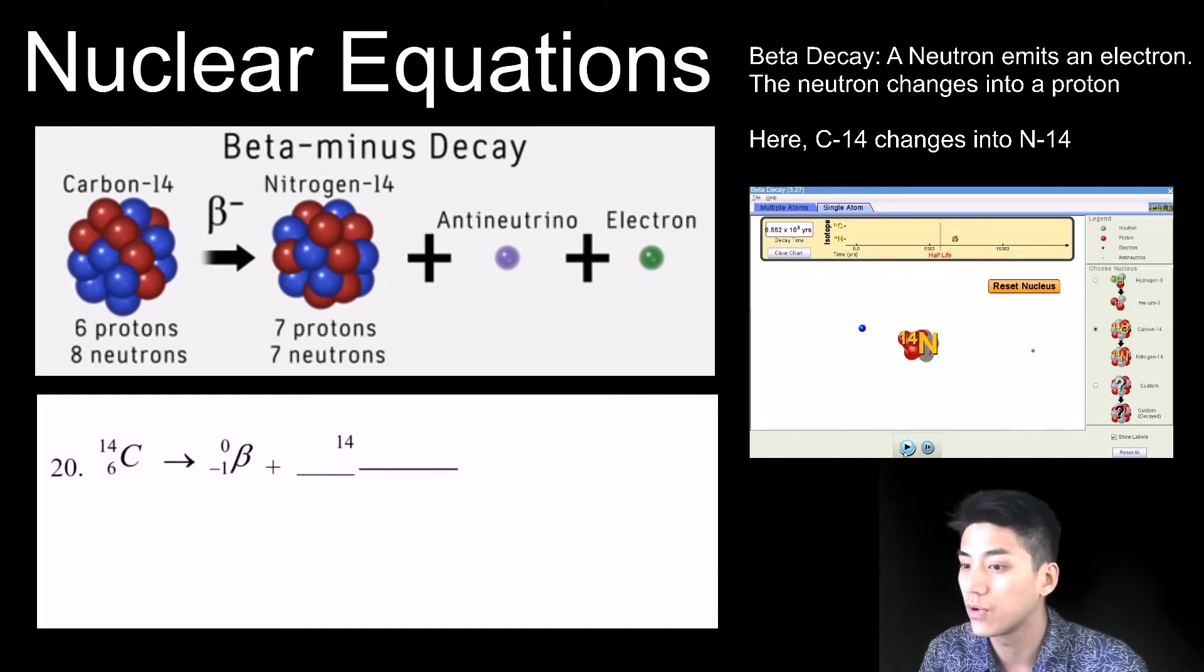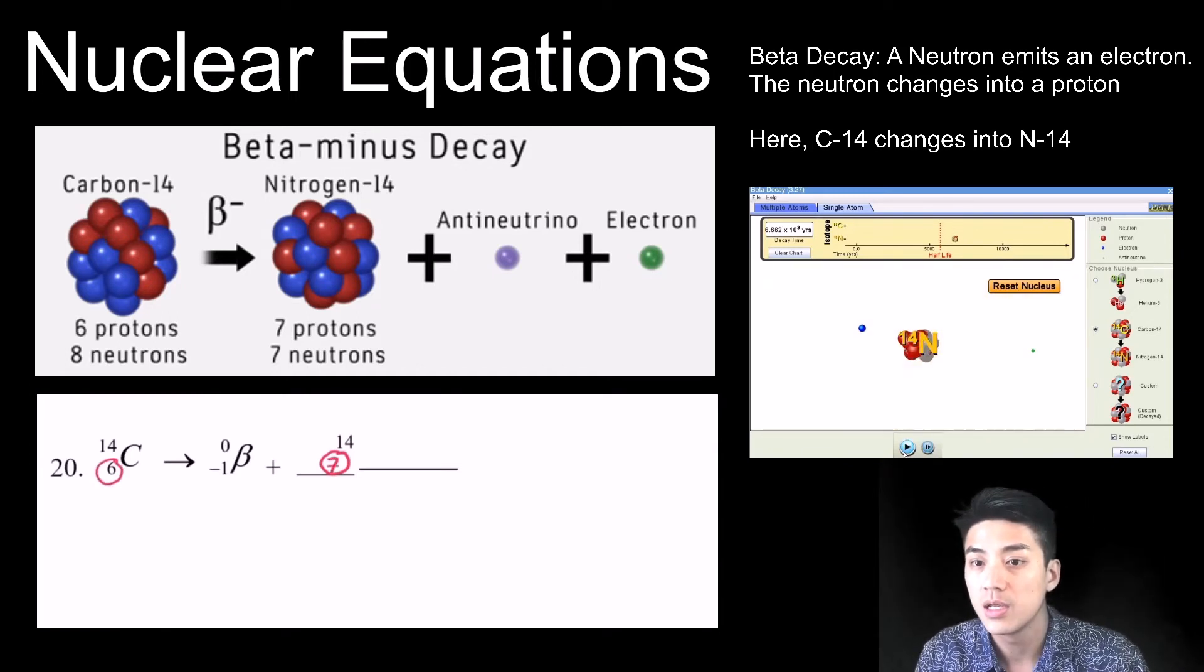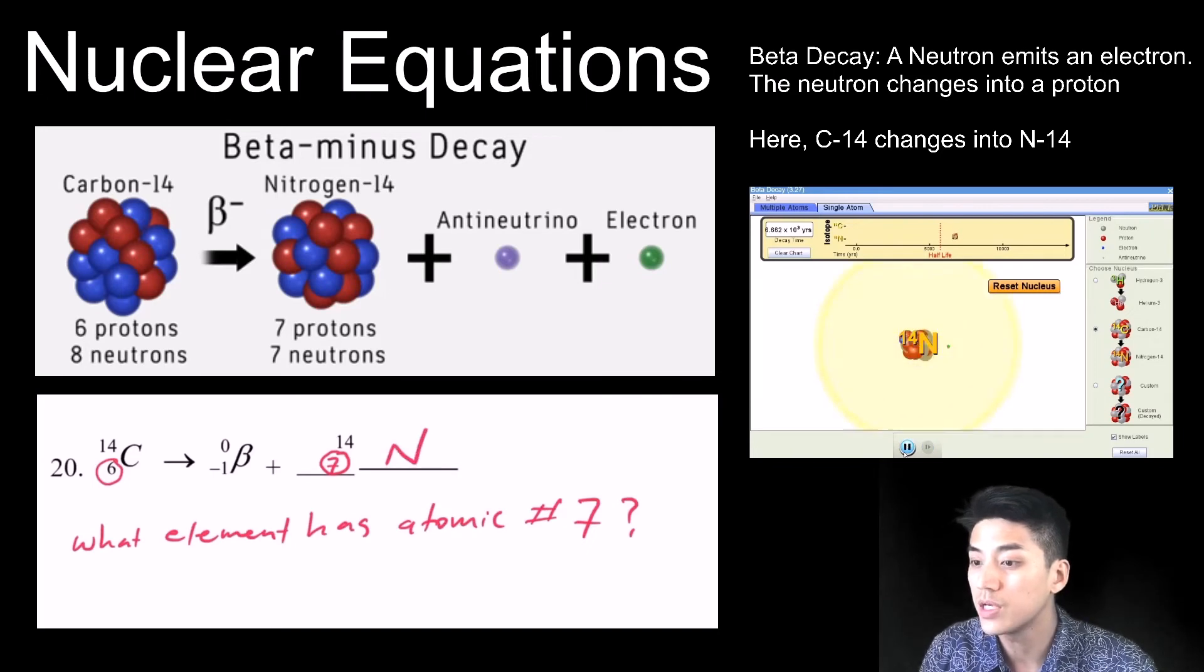And when it does that, the carbon-14 transforms into nitrogen-14. The masses are still the same. They're still both 14. You have carbon-14 and you have nitrogen-14.